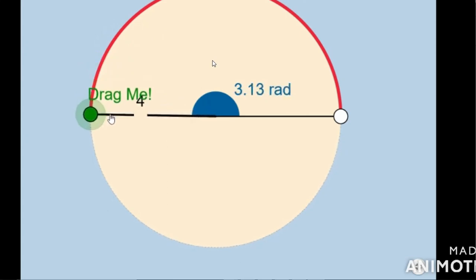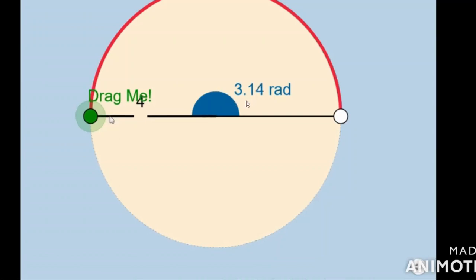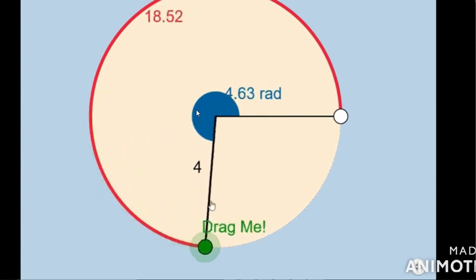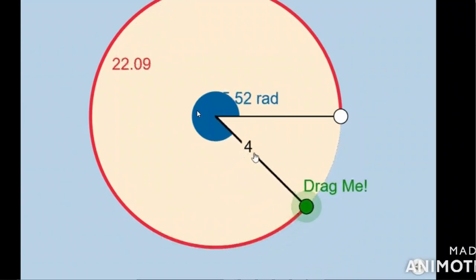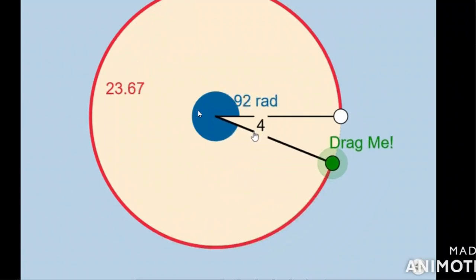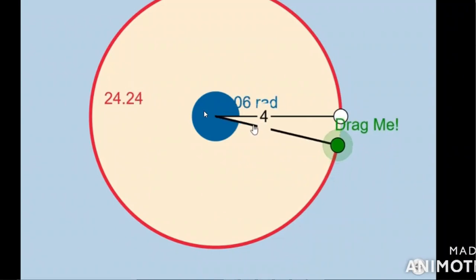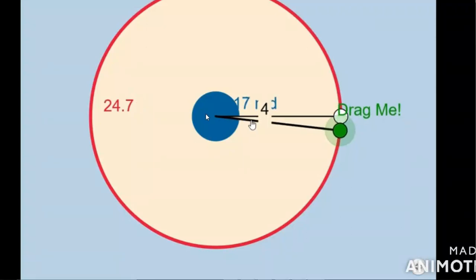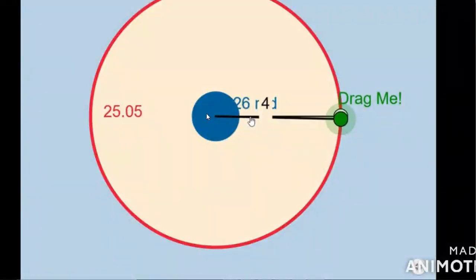If you make half a rotation of the circle, that will make an angle of 3.14 radians, which is equal to 180 degrees. A complete rotation makes 360 degrees, which is equal to 6.28 radians. This 6.28 is actually the circumference — 25.05 units — divided by the radius of 4 units, giving the circumference in terms of the radius.